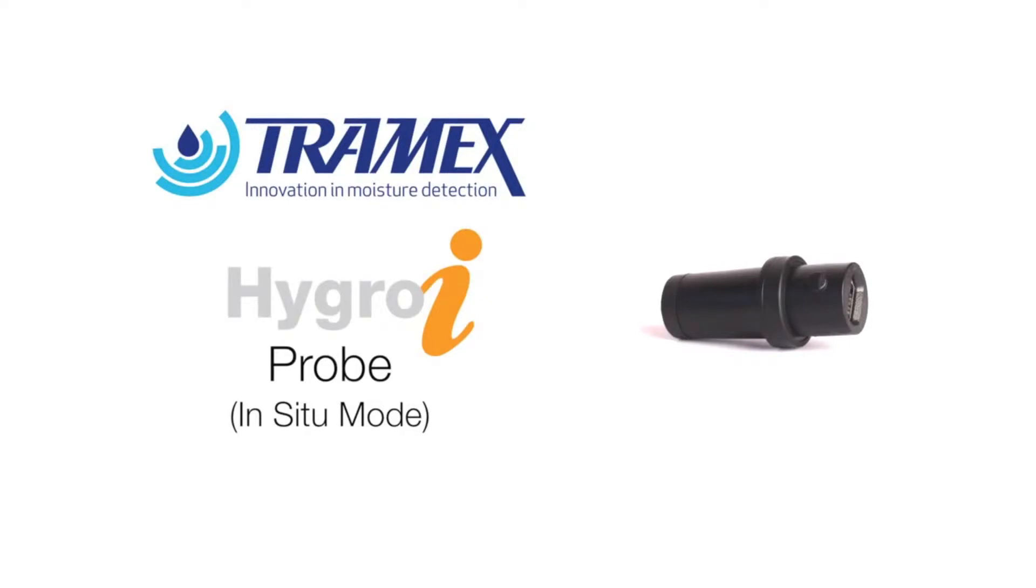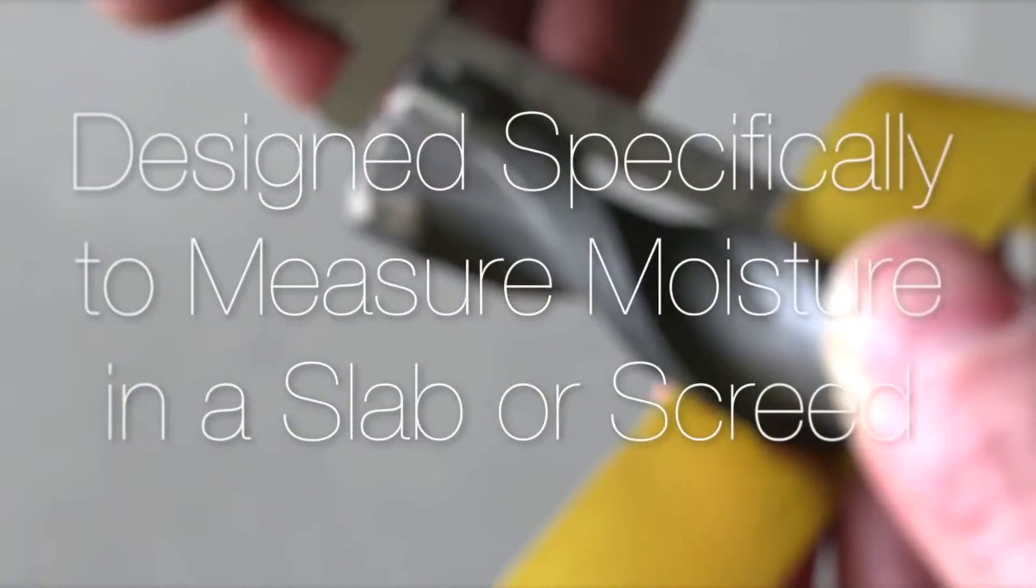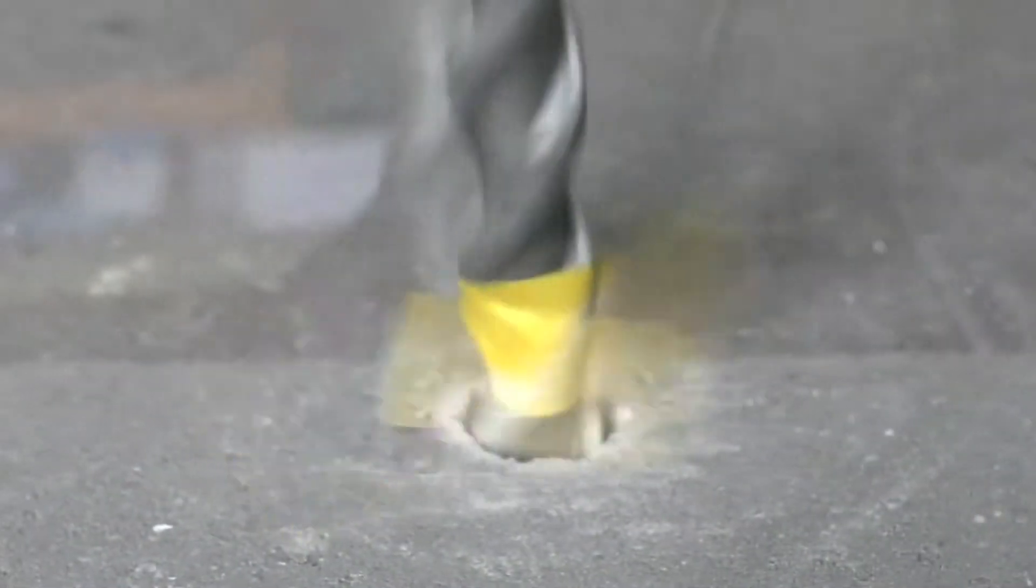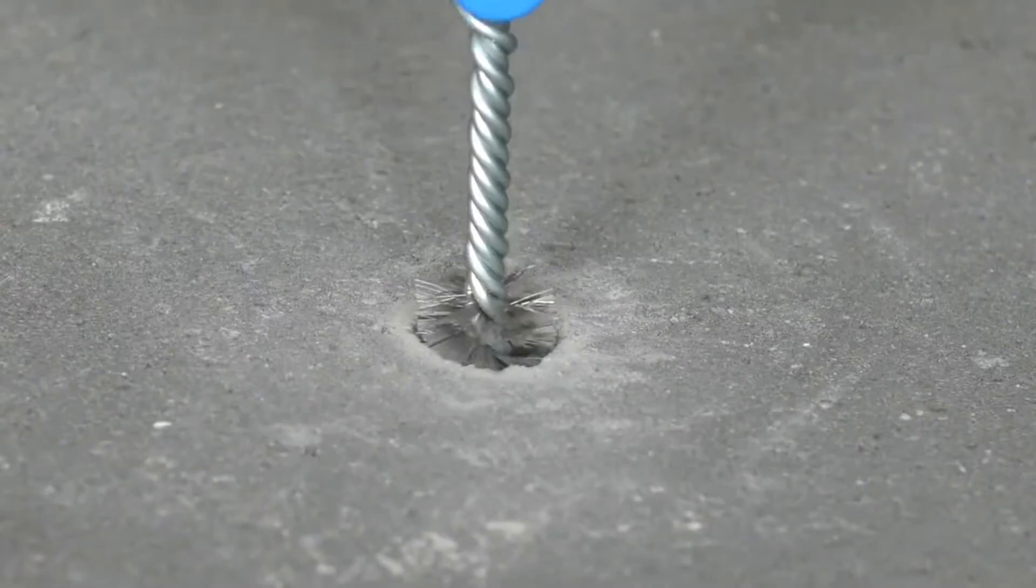The Tramex reusable Hygroi relative humidity probe has been designed specifically for measuring the potential moisture condition of a slab or screed as per ASTM F2170.